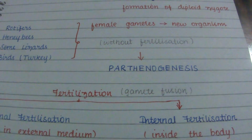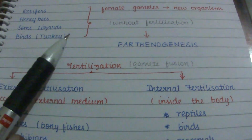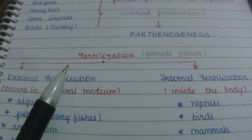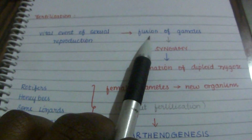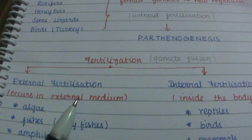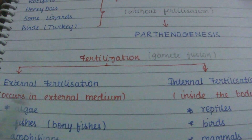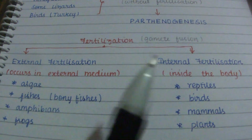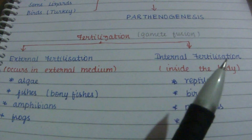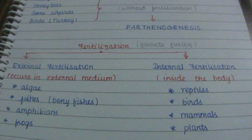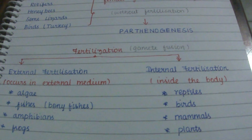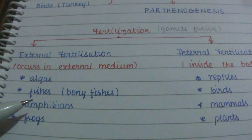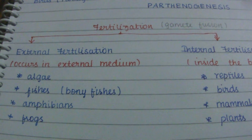The fertilization process may be external or internal. If the fusion of gametes occurs outside the body in an external medium, it is called external fertilization. If it occurs inside the body, it is called internal fertilization. Examples of external fertilization include algae, bony fishes, amphibians, and frogs.